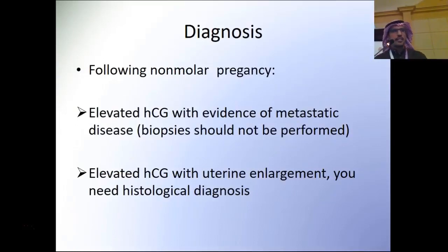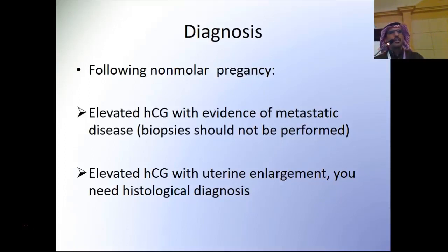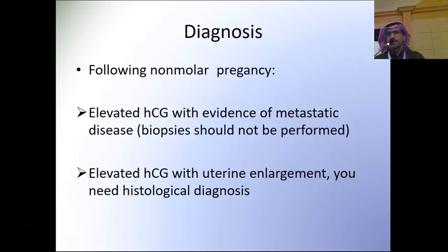Following non-molar pregnancy, if there is elevated beta-HCG with evidence of metastatic disease, a diagnosis can usually be made, and biopsy should not be performed because this tumor is highly vascular with a high risk of life-threatening hemorrhage. If there is elevated beta-HCG with uterine enlargement only and no metastatic disease, histological diagnosis may be considered, as it could be another pregnancy, retained tissue, or GTN.